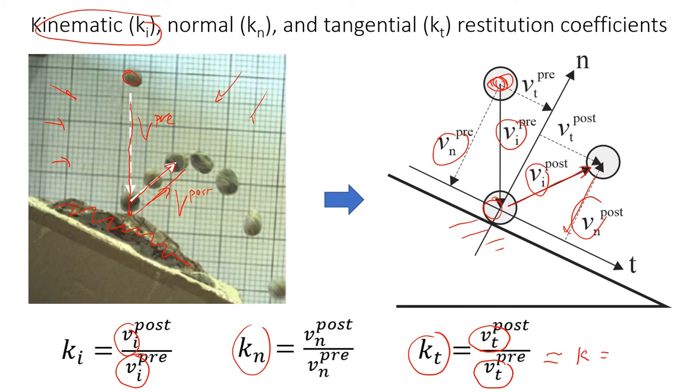For most of the coefficients of restitution, the values will be less than one. It also depends on the hardness of the rock surface and the rock. The harder the rock and the rock surface, the higher the coefficient of restitution will be, but typically it will range from 0.6 to 0.8 for fresh rocks. If we have soft and weathered rocks, the coefficient of restitution can actually drop to 0.4 to 0.6.